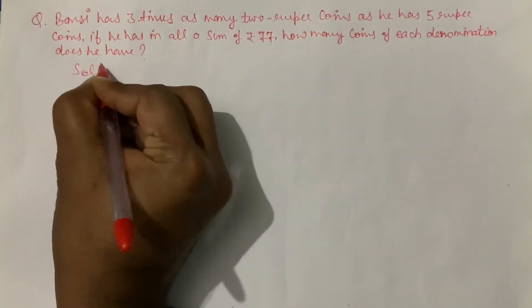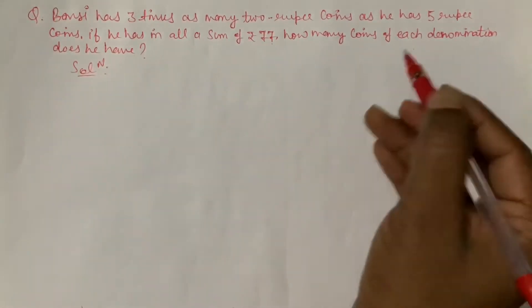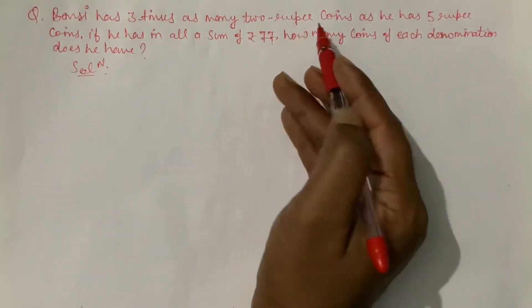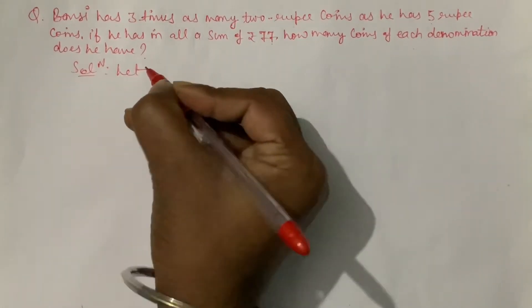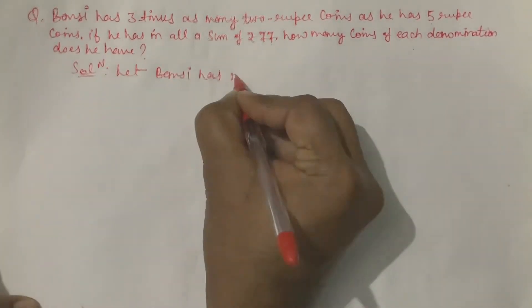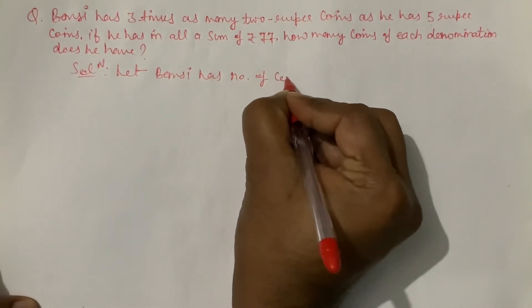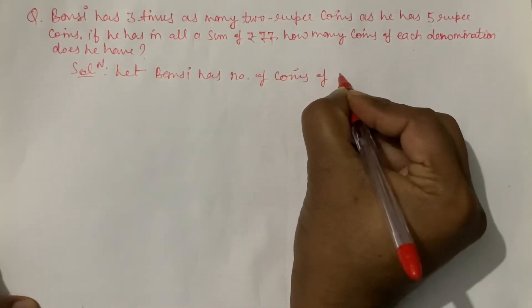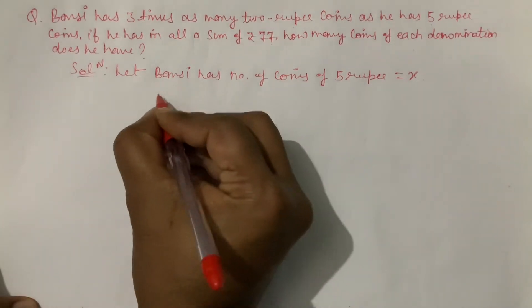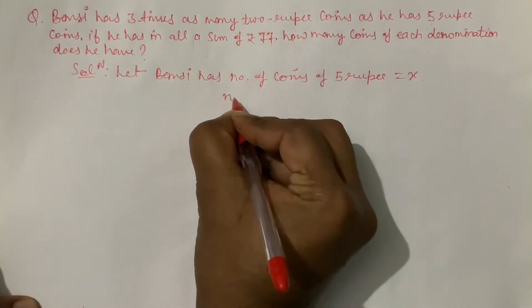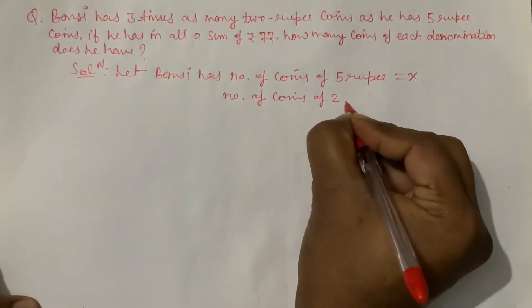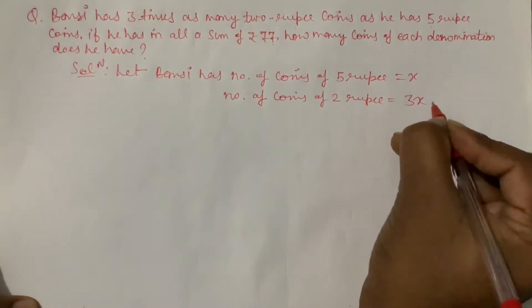Pehle likhenge solution. Humein kya pata hai ki uske paas jitne five rupee ki coins hain, uska three times two rupee ke coins hain. Toh let karenge: let Bunsi has number of coins of five rupee equal to x. Toh uske paas number of two rupee coins kitne ho jayenge? Number of coins of two rupee equal to 3x ho jayega.